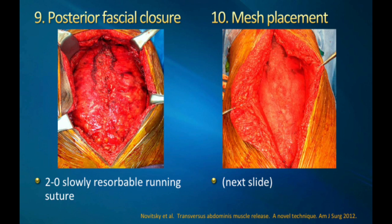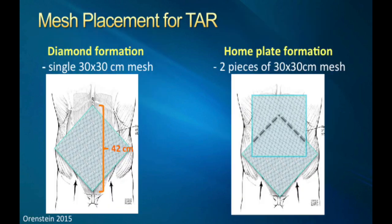When all the TAR dissection is complete, remove your accountable laparotomy towel and do a final inspection of the abdomen. This is followed by closure of the posterior fascial layer, typically with a 2-0 slowly resorbable suture, and then it's on to mesh placement. For mesh placement, my go-to mesh is typically a 30x30 cm soft polypropylene mesh in a diamond formation. If you take a 30x30 mesh and rotate it as a diamond, you get about 42 cm from long point to long point, which is sufficient for most central defects.